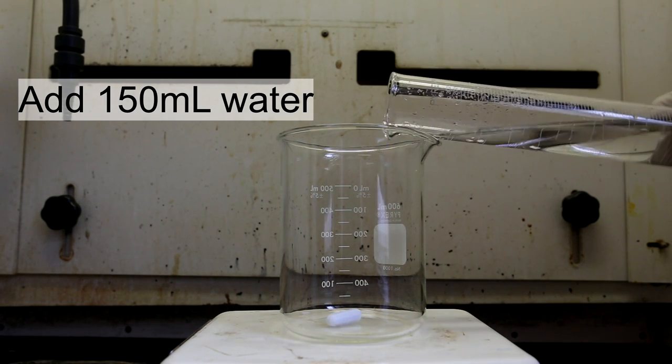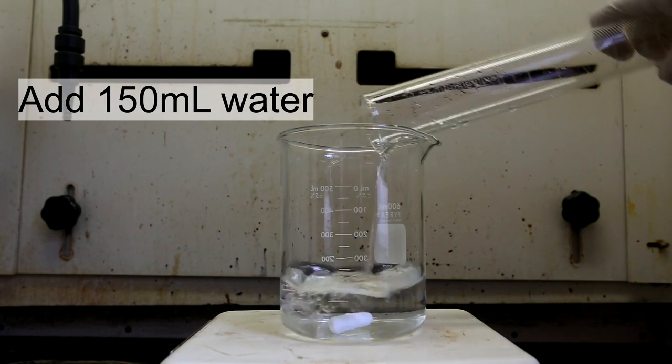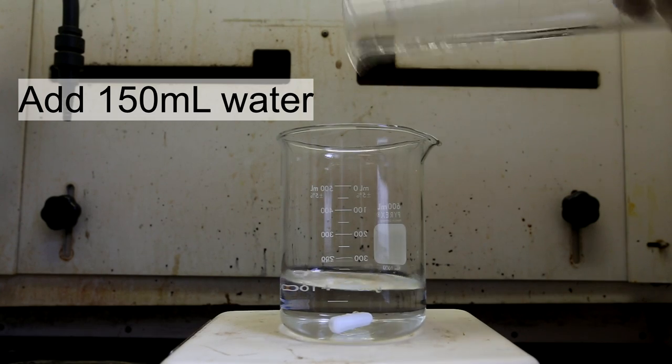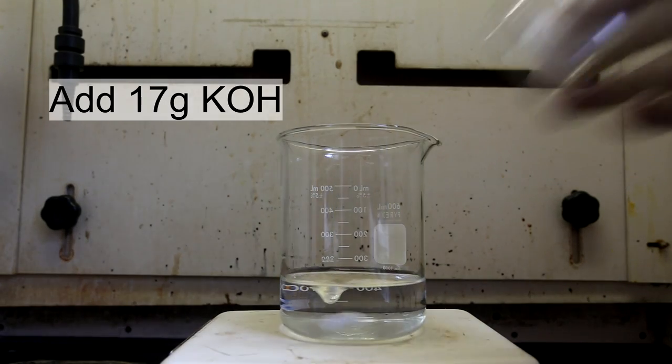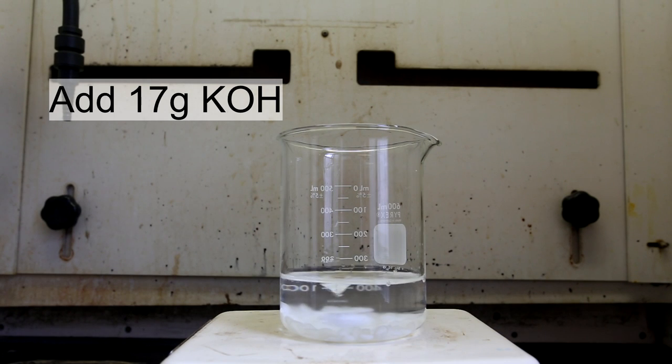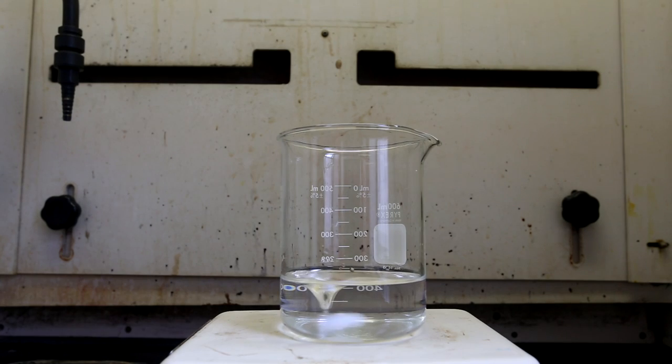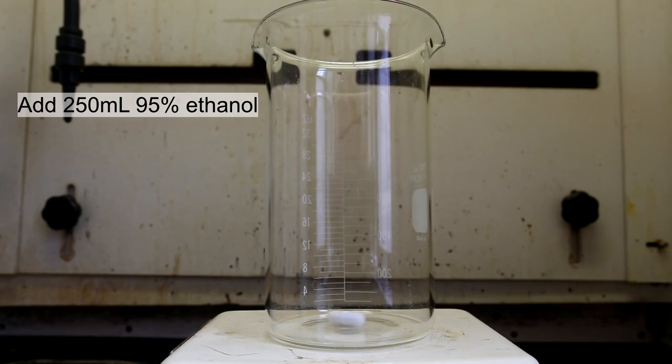First, we will need to make our potassium hydroxide solution, so start by adding 150 milliliters of water to a beaker. Next, add 17 grams of potassium hydroxide and stir. The solution will become cloudy, but let it stir until it fully clears up.